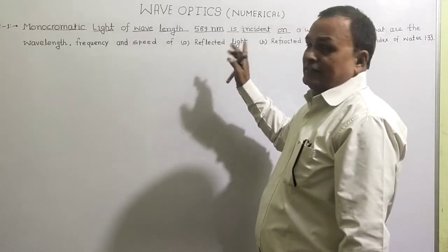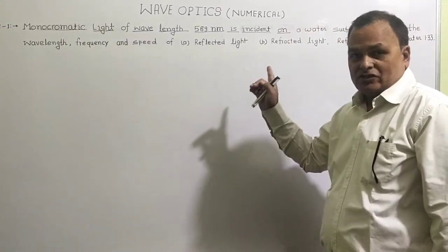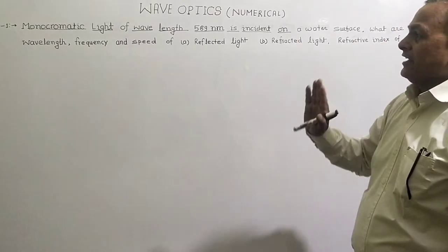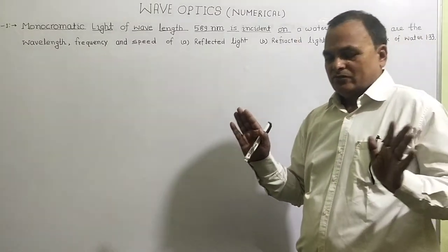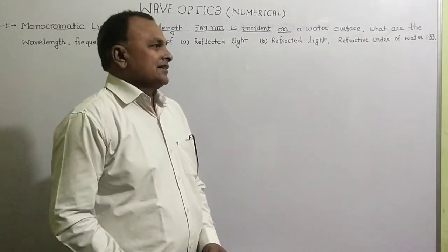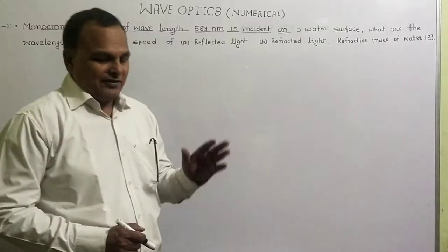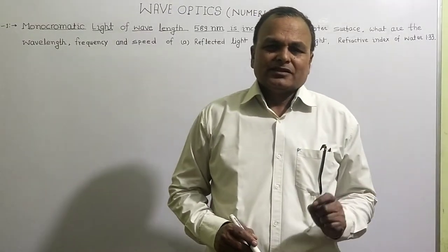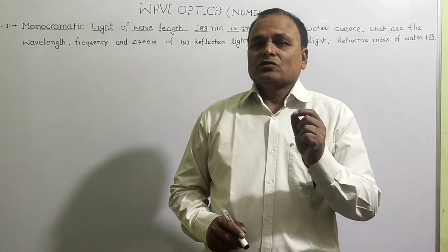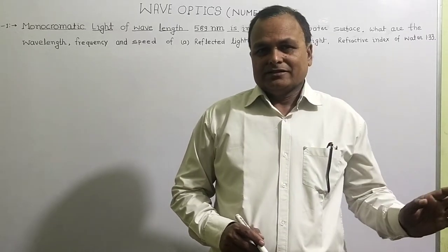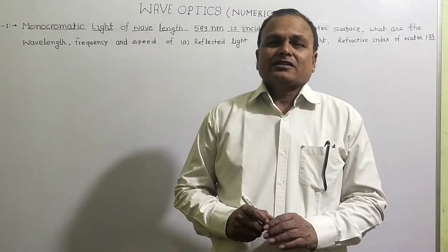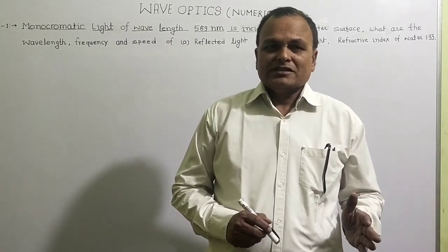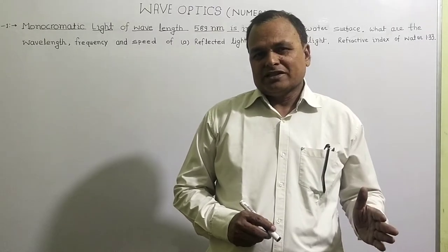When light is reflected, we have to find the speed, frequency, and wavelength of the reflected light. We know that in reflection, there is no change in wavelength, there is no change in speed, and there is no change in frequency.